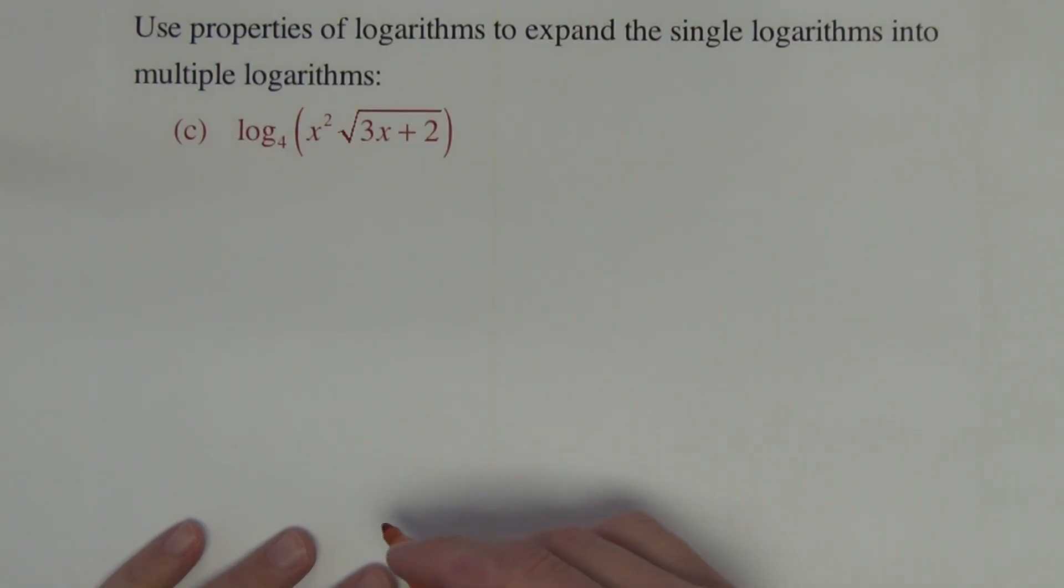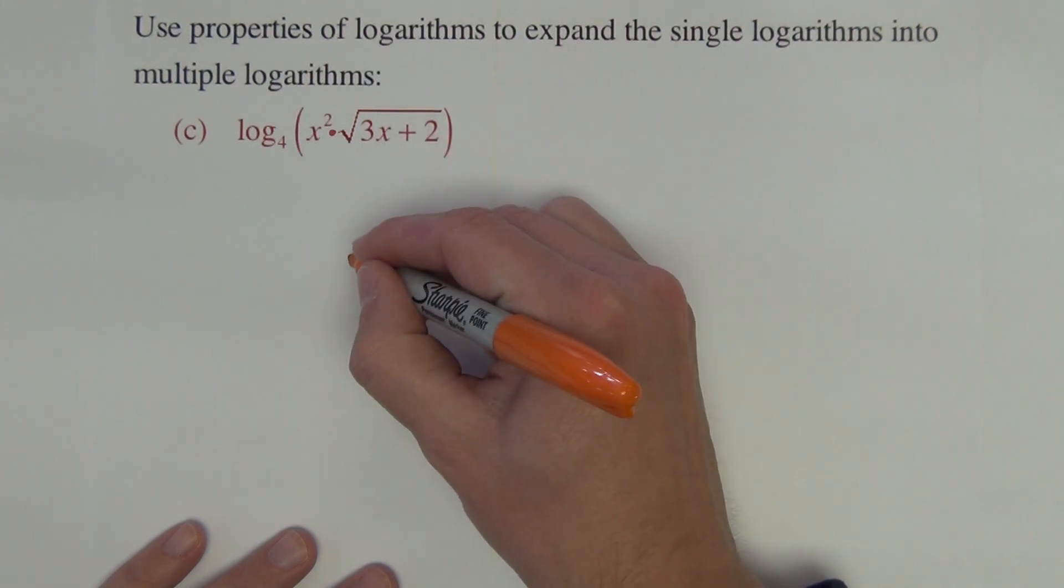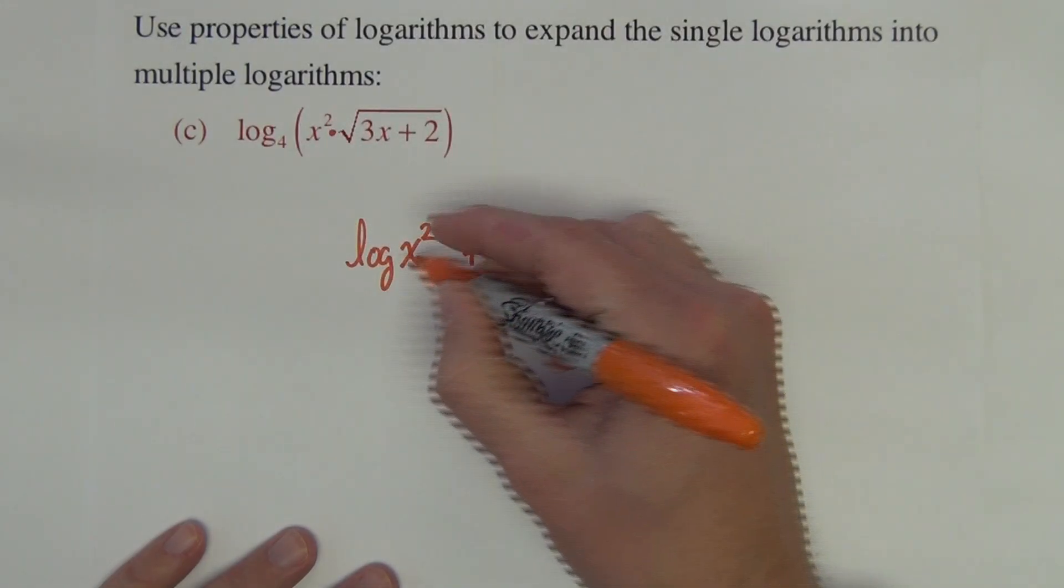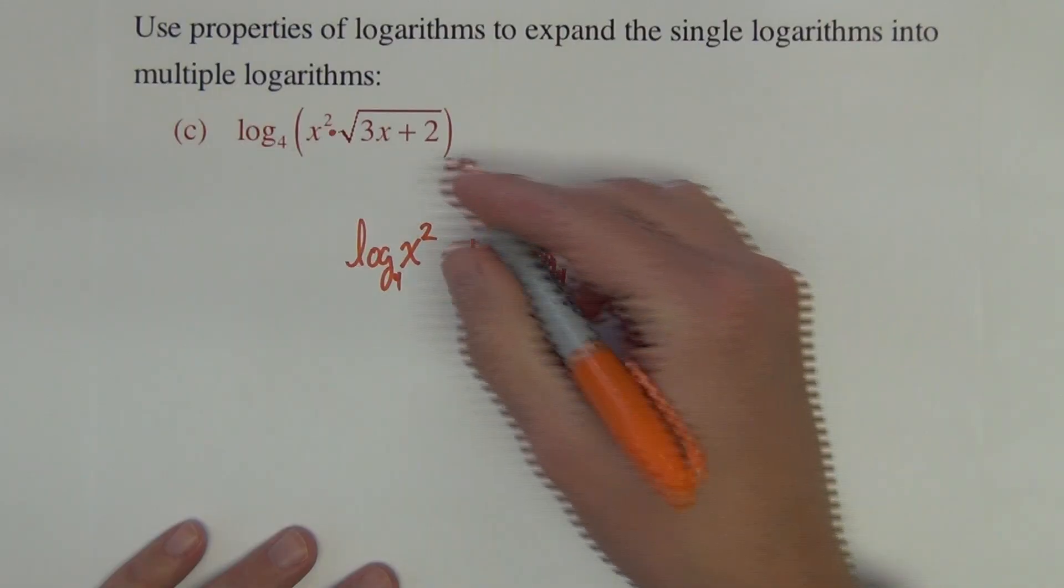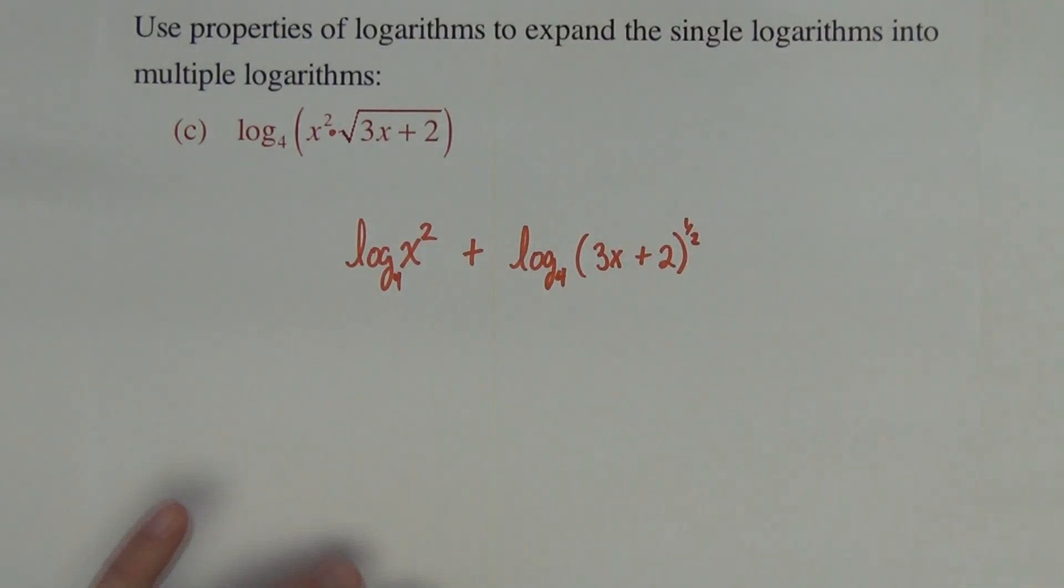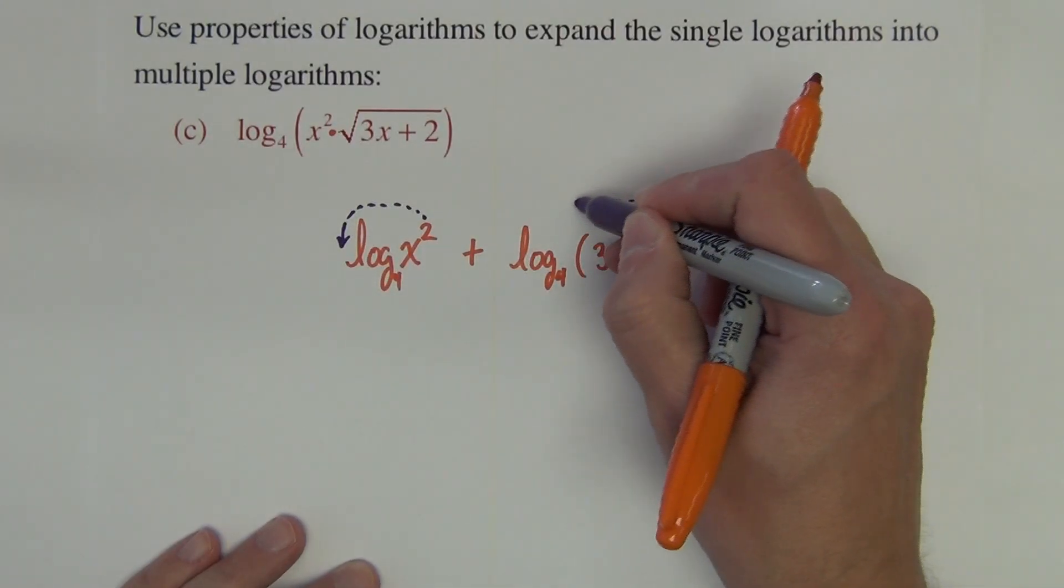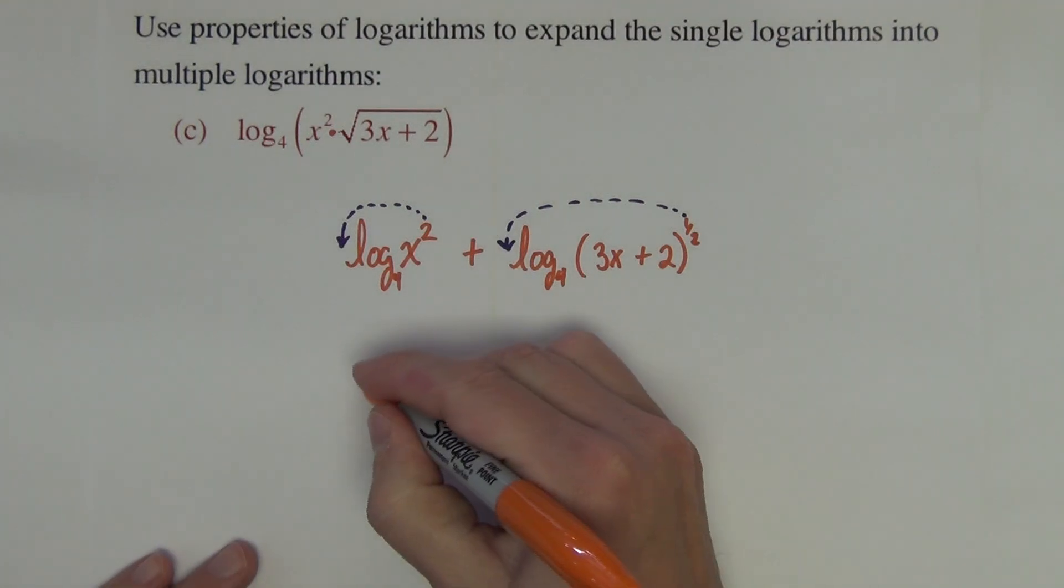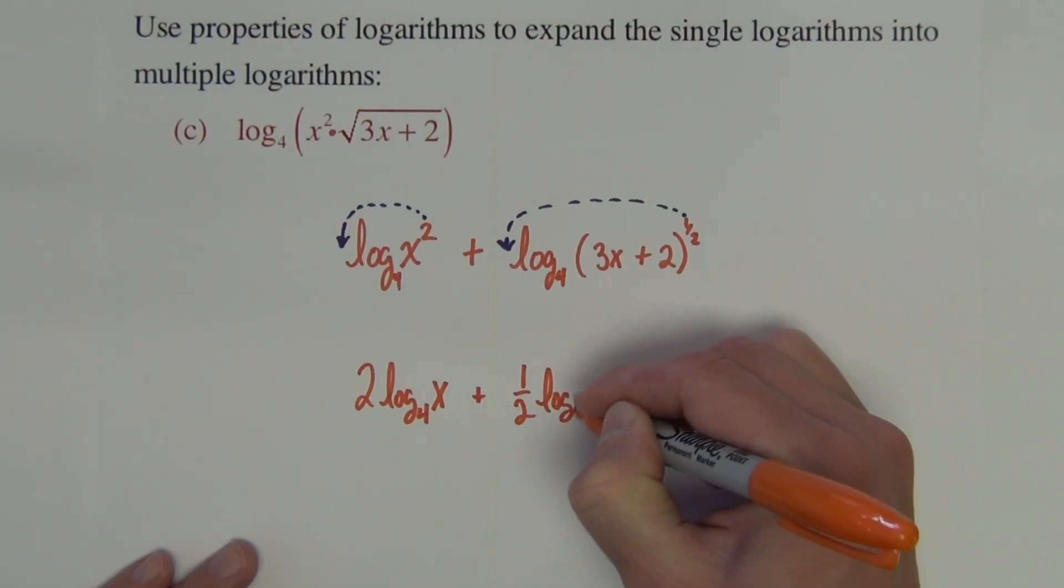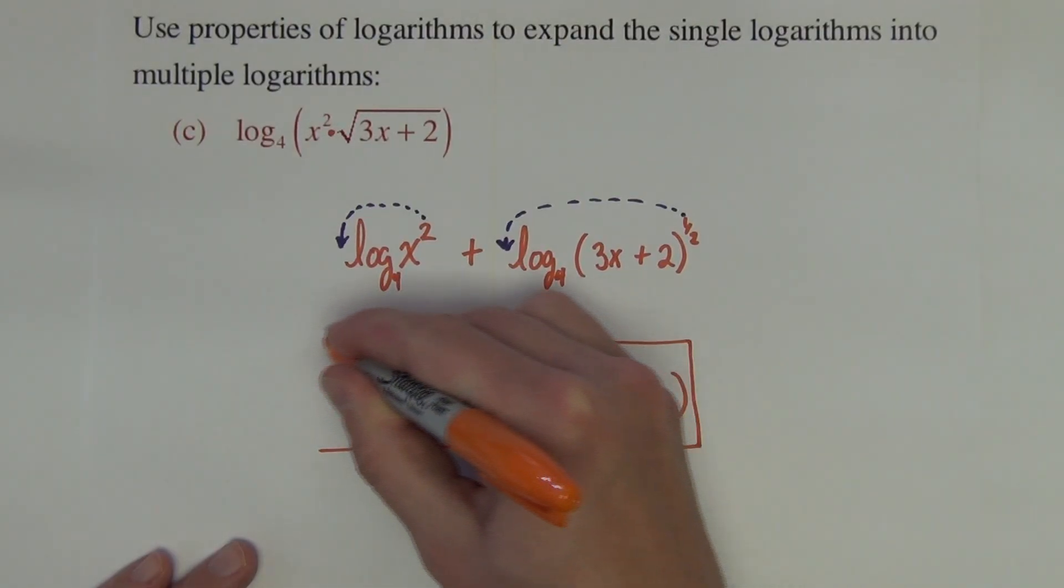One final example of this type of problem. Here you see a product between x squared and the square root 3x plus 2. So we get log x squared plus, where the product is, log base 4 of the square root 3x plus 2. I'm going to write this as 3x plus 2 quantity to the half power. I like seeing powers, even the radicals, because it's those powers that we pull out to the front of their respective logarithms. So this is 2 log base 4 of x plus half log base 4 of 3x plus 2. And finished.